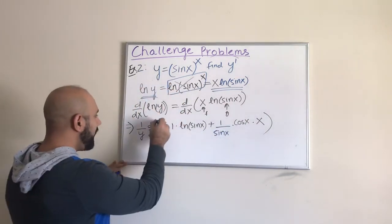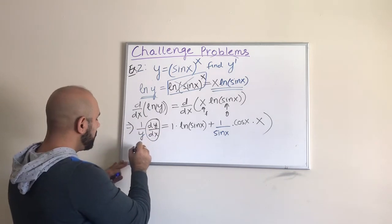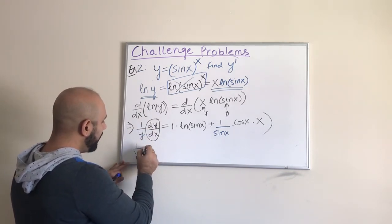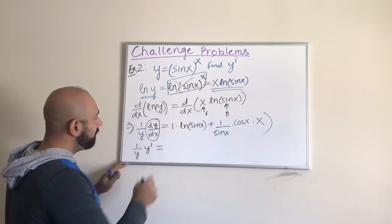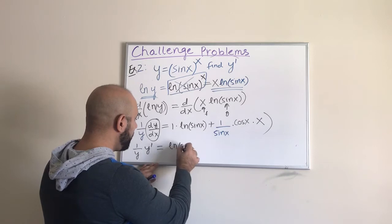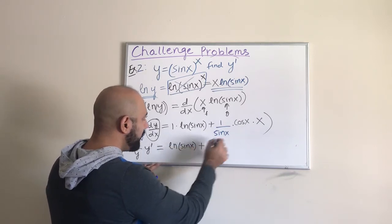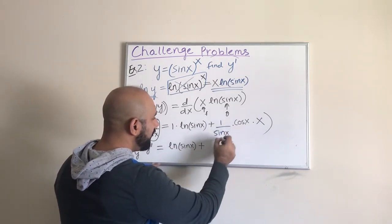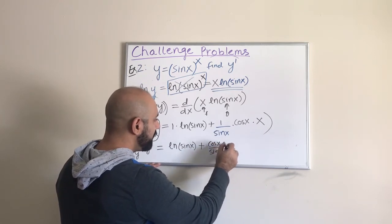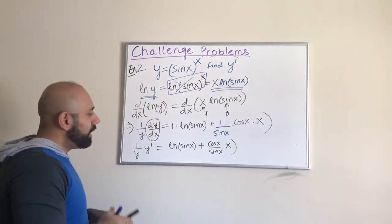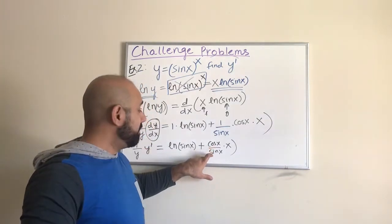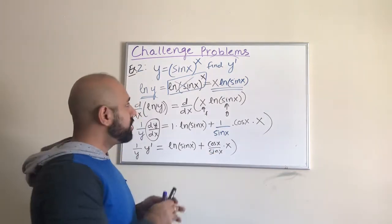So putting it together, we have (1/y)·(dy/dx) equals ln(sin(x)) plus cos(x) over sin(x) times x. We already know that the ratio of cosine over sine is the cotangent, so cos(x)/sin(x) = cot(x).